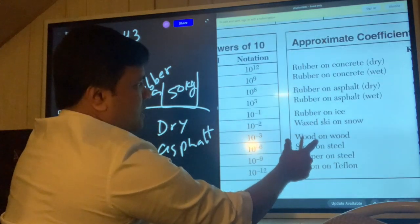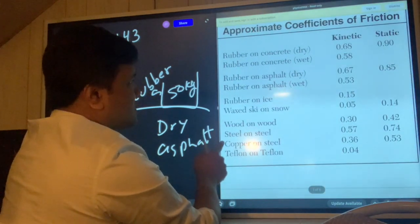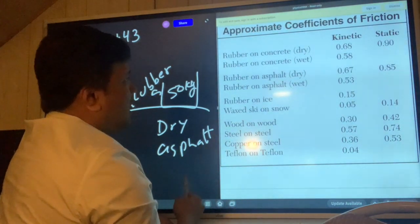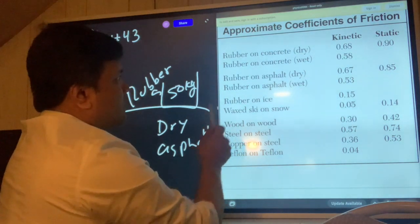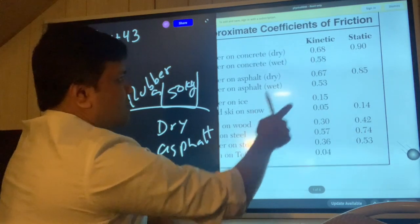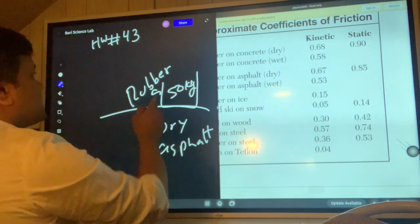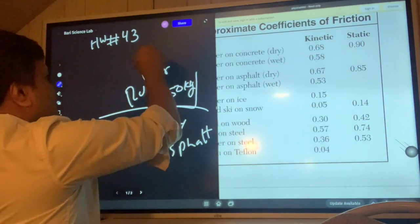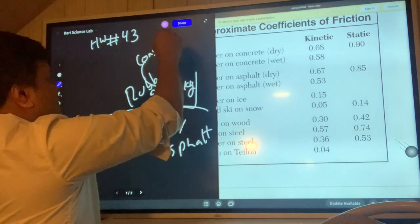Let's make it bigger. I see rubber on asphalt dry. Make sure that we understand that this sled is at constant velocity.